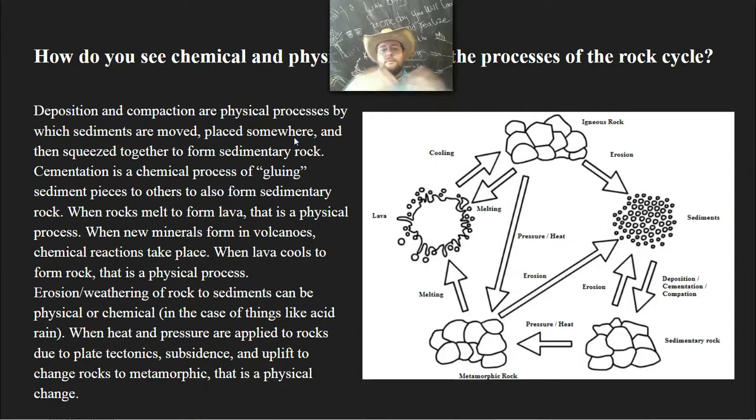When a rock melts to form lava, whether it melts from metamorphic rock, igneous rock, or sedimentary rock, that is a physical process of melting. When new minerals form in volcanoes by chemicals reacting to each other in the heat of the lava, that's a chemical process. When lava cools to form rock, that's a physical process.